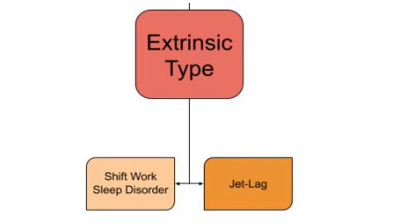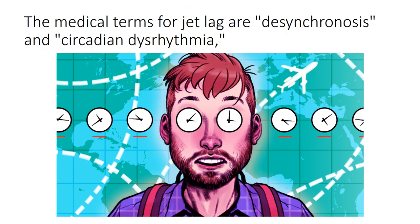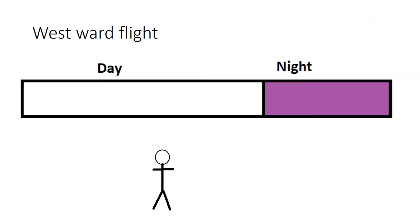We will discuss the two extrinsic types: shift work sleep disorder and jet lag. The medical terms for jet lag are dyssynchronosis and circadian dysrhythmia. When we travel more than two time zones, our internal clock is disturbed — this is called jet lag.